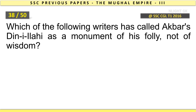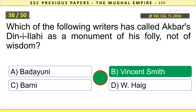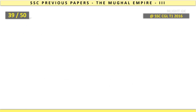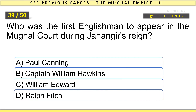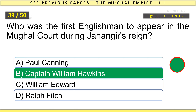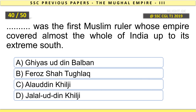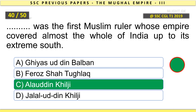Which of the following writers has called Akbar's Din-e-Ilahi a monument of his folly, not of wisdom? Vincent Smith. Who was the first Englishman to appear in the Mughal court during Jahangir's reign? Captain William Hawkins. Who was the first Muslim ruler whose empire covered almost the whole of India up to its extreme south? Alauddin Khilji.